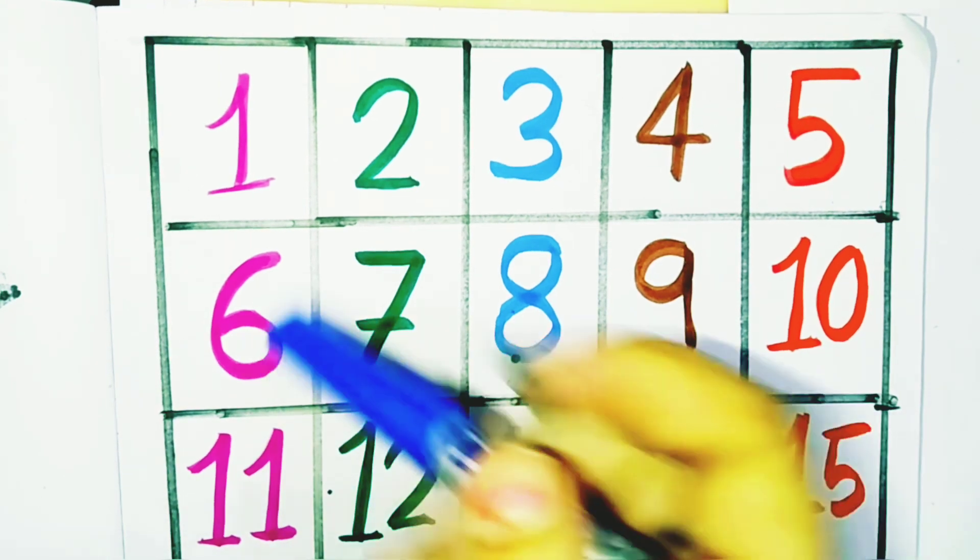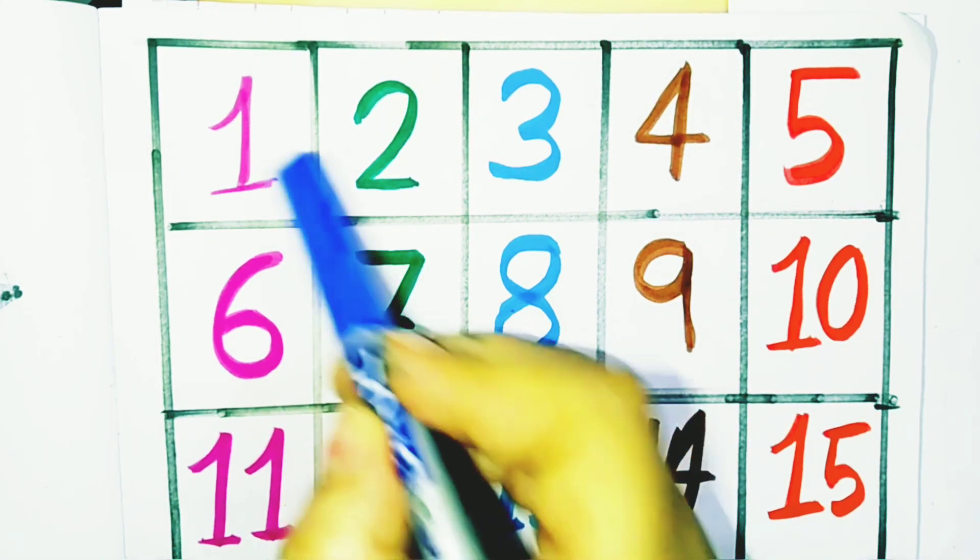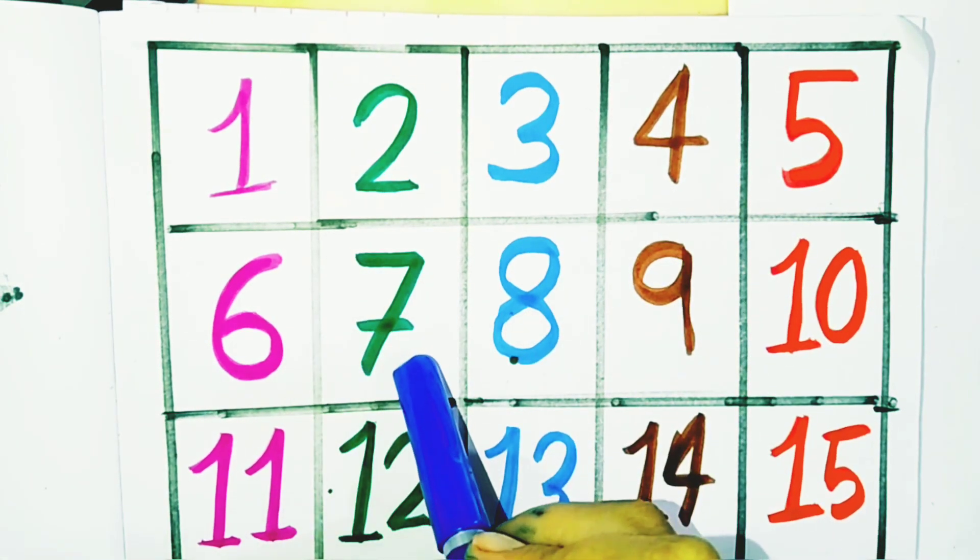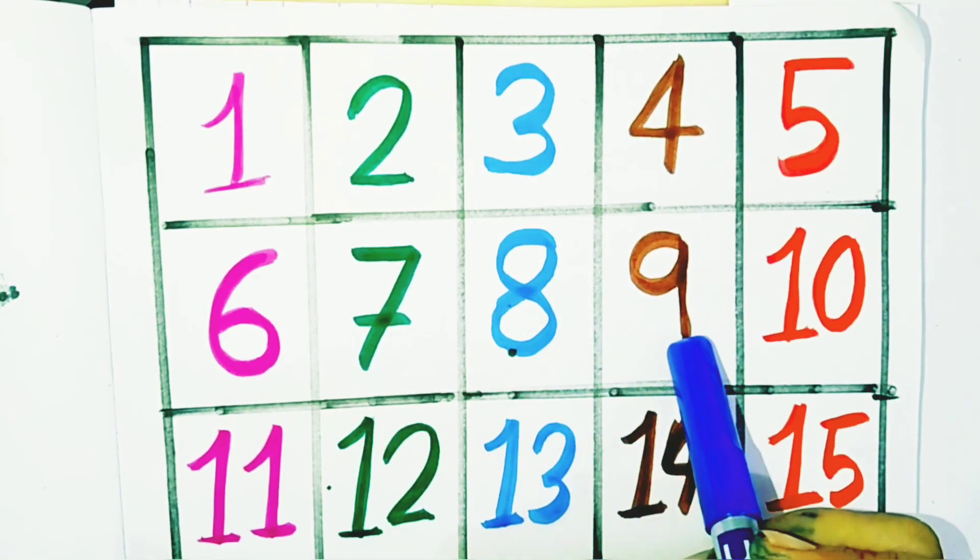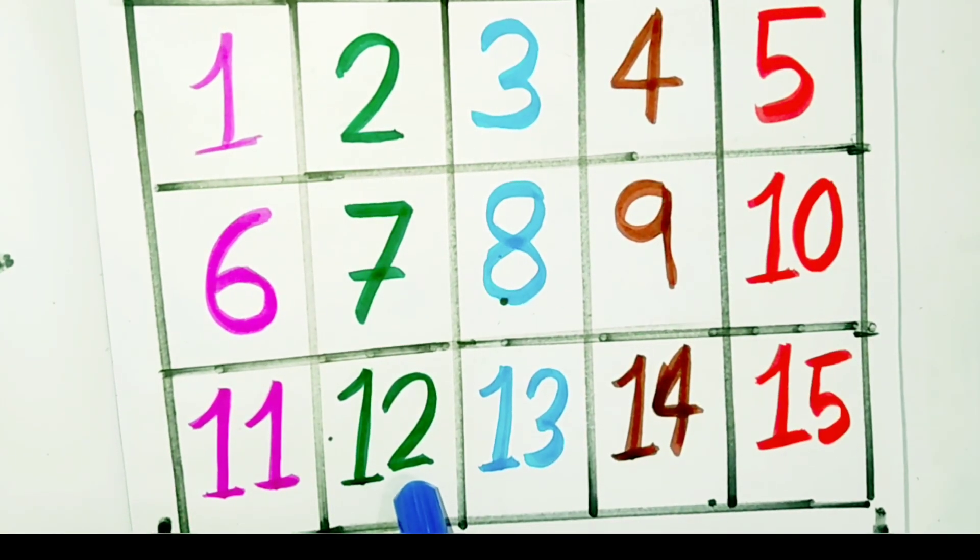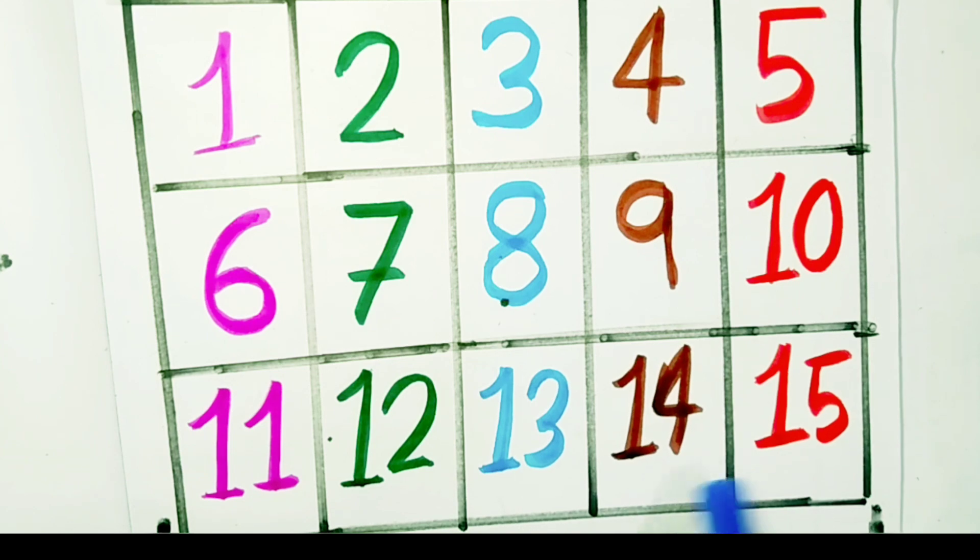Now let's learn the color. One, two, three, four, five, six, seven, eight, nine, ten, eleven, twelve, thirteen, fourteen, fifteen.